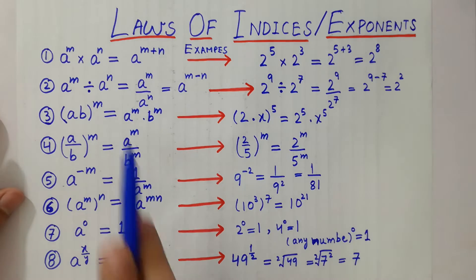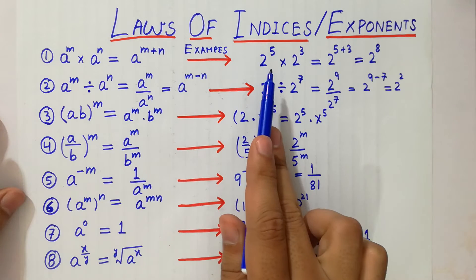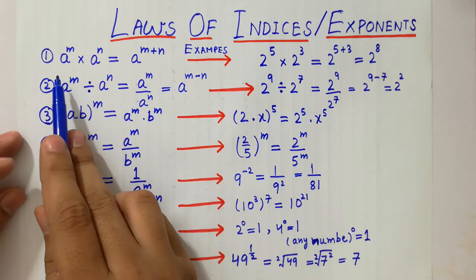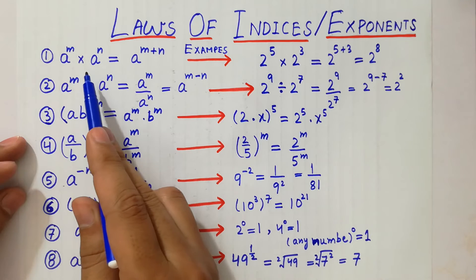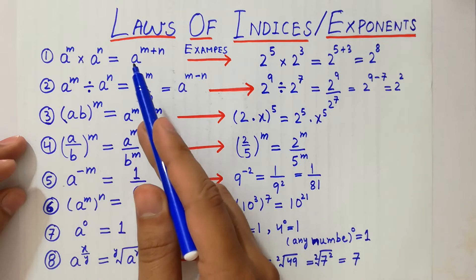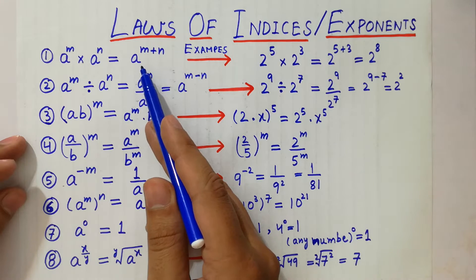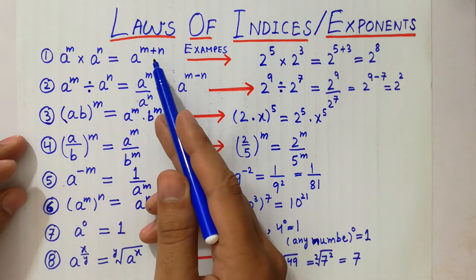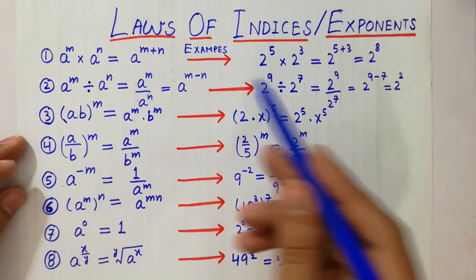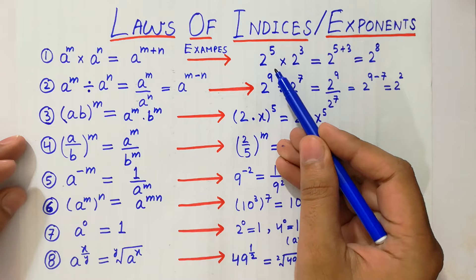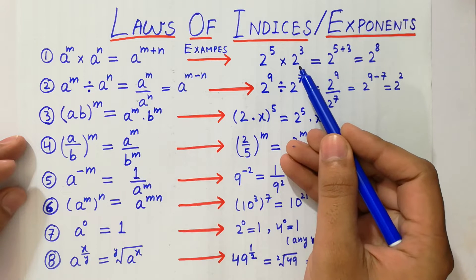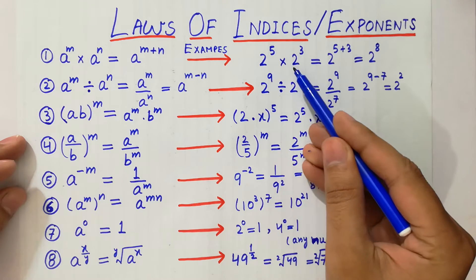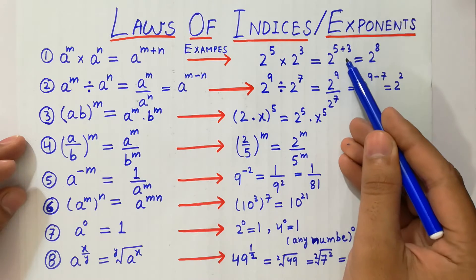Let's learn laws of indices or exponents with examples. First, a raised to power m multiplied by a raised to power n is always equal to a raised to power m plus n, because the bases are the same, so powers are added together. For example, 2 raised to power 5 multiplied by 2 raised to power 3 is equal to 2 raised to power 5 plus 3, which gives us 2 raised to power 8.